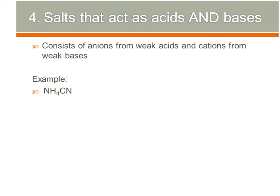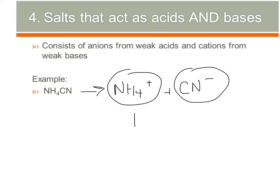The last types of salts are ones that act as acids and bases. These consist of anions from weak acids and cations from weak bases. In the example here, NH4CN is going to break down into NH4+ plus CN-. Both of these are now going to react with water and establish equilibriums, so they will be salts that act as both acids and bases.